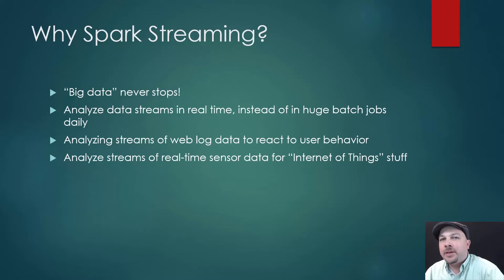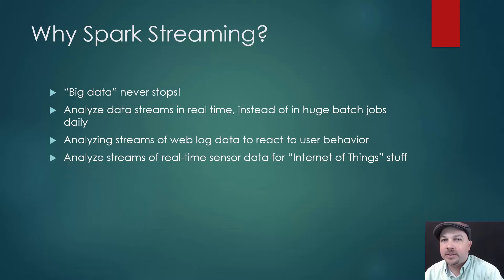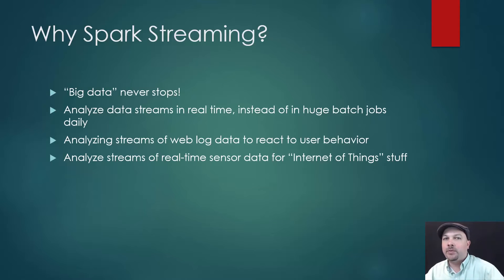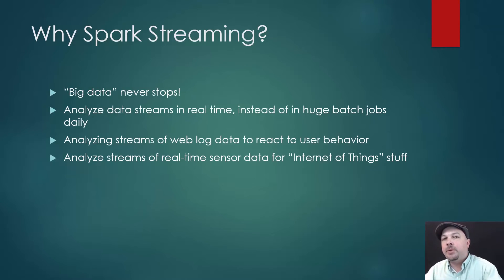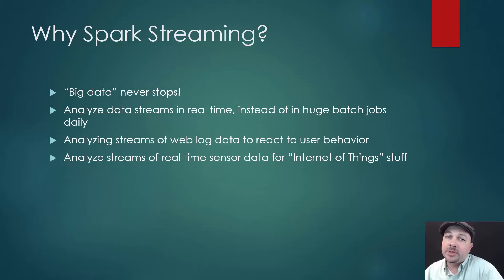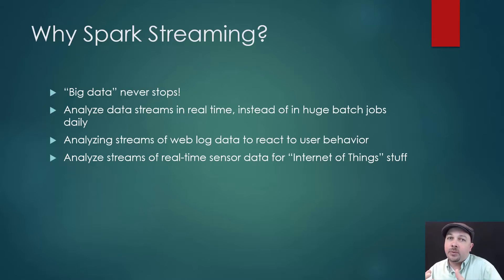Well, big data never stops. If you just use Spark by itself, it's great for processing massive data sets in one fell swoop. Maybe you have a big corpus of data and you just need a one-time answer out of it, or running this job once a day is sufficient — maybe you're just generating some daily report. But what if you want to update your results in real time? What if instead of processing a giant data set periodically, you just process the new bits that come in as they arrive and keep updating your results over time, basically forever?